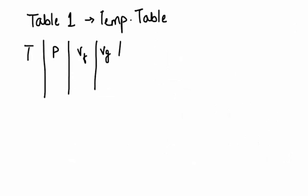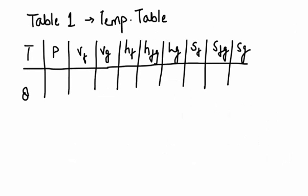If you open the first table, which is the temperature table, you see these values. Now suppose you're given temperature as 85 degrees Celsius and you have to find the enthalpy of saturated steam. Then you will see the value of Hg. To find the specific entropy, you will see the value of Sg in front of 85 degrees Celsius.